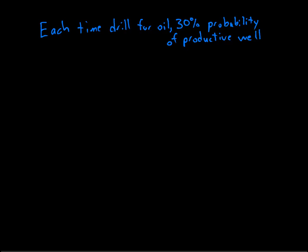So let's suppose that each time we drill for a well we get a 30% probability of that well being productive. I'm going to assume that five drillings are done.